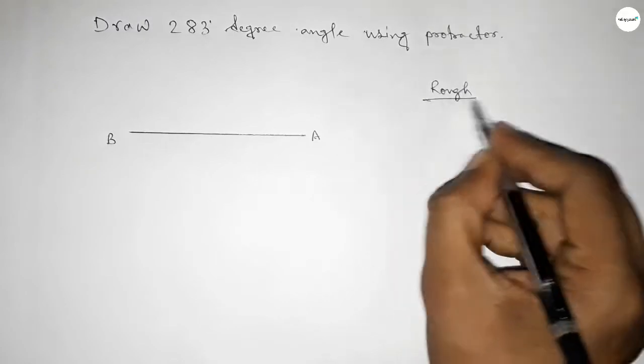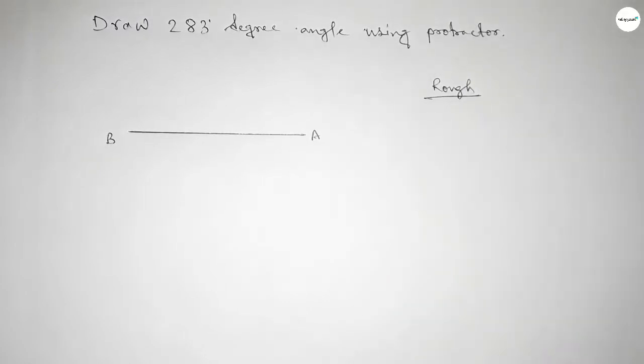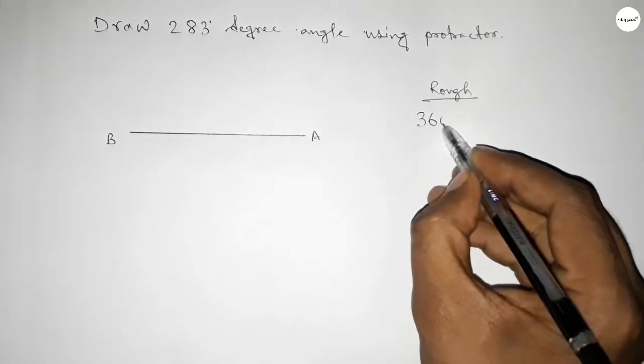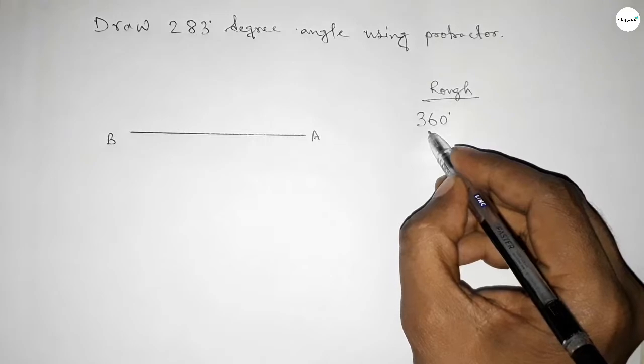Now roughly discussing some important calculations. If we subtract 77 degrees from 360 degrees, then we can get 283 degrees.